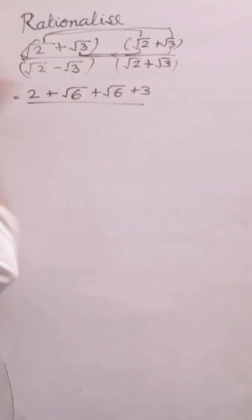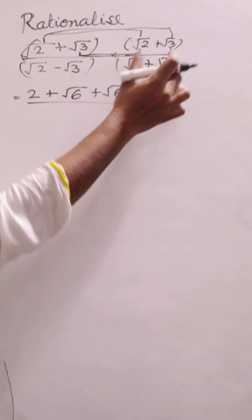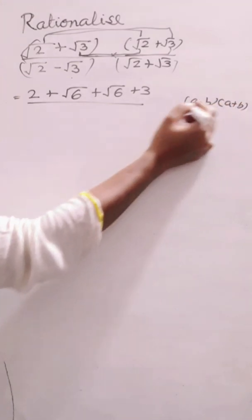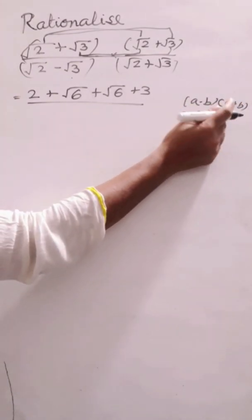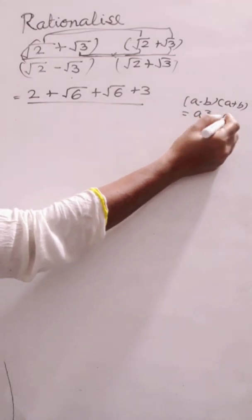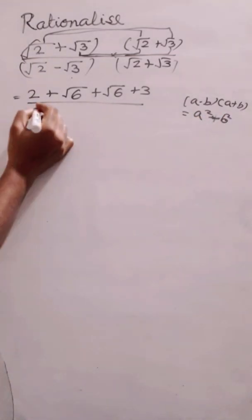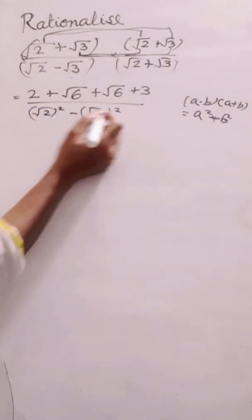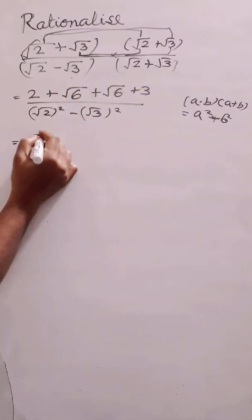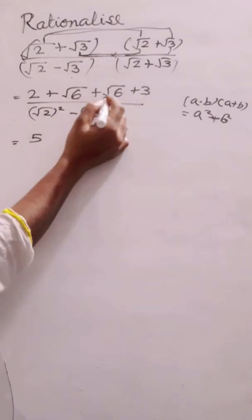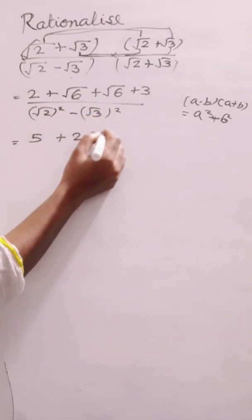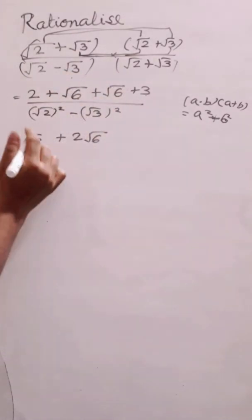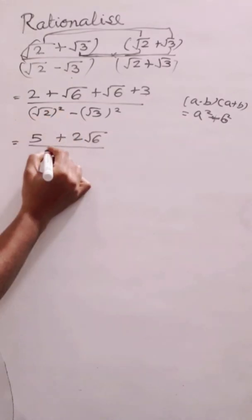Now we can see we have the formula (a - b)(a + b). We know that (a - b)(a + b) equals a² minus b². So here using the same formula I will have root 2 squared minus root 3 squared. Now 2 plus 3 is 5, and root 6 plus root 6 are like terms — just like x plus x is 2x — so root 6 plus root 6 gives 2 root 6, and in the denominator I get 2 minus 3.